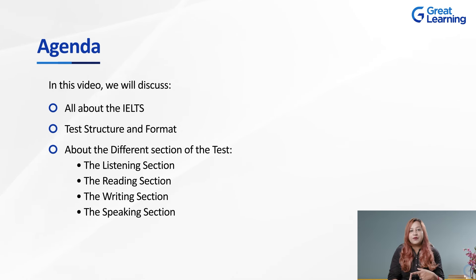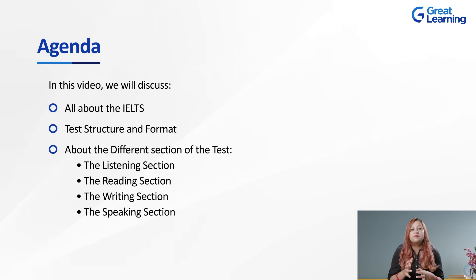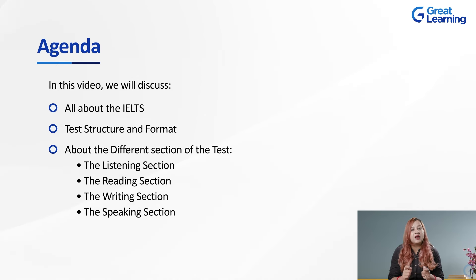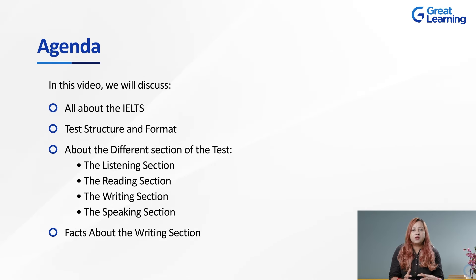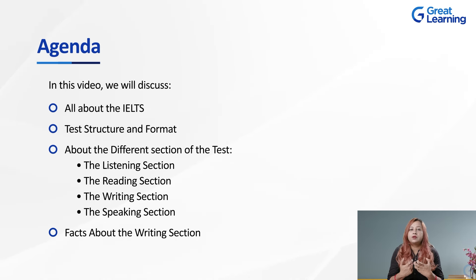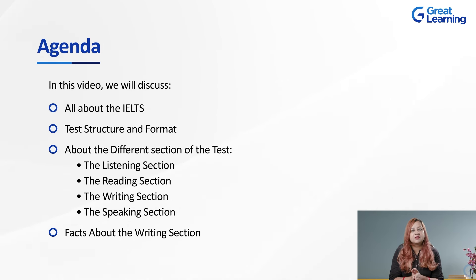You convey your message to the other person through speaking or writing — if you're writing a mail or a text message to your friend, you're trying to pass a message through the written form. We will also learn about the scoring guidelines — how many correct answers you should have to get a desired band score. For listening, reading, writing, and speaking, we have different band descriptors, and we will understand these band descriptors separately.